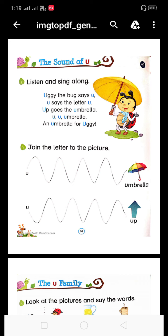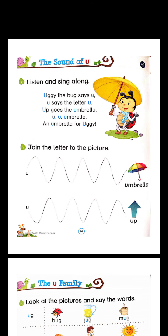Oogie bug U کہتا ہے. Oogie the bug says U — Oogie bug U کہتا ہے. U says the letter U — U اکھر U کہتا ہے. Letter means اکھر. Up goes the umbrella — UU jata hai. An umbrella for Oogie — Oogie ke liye ek chata.